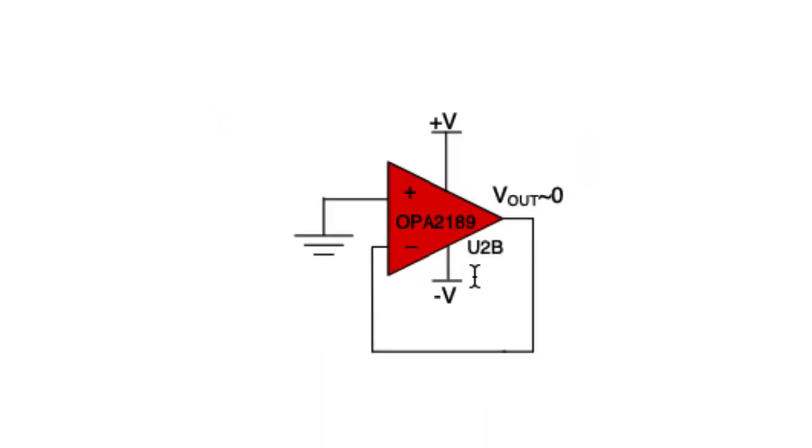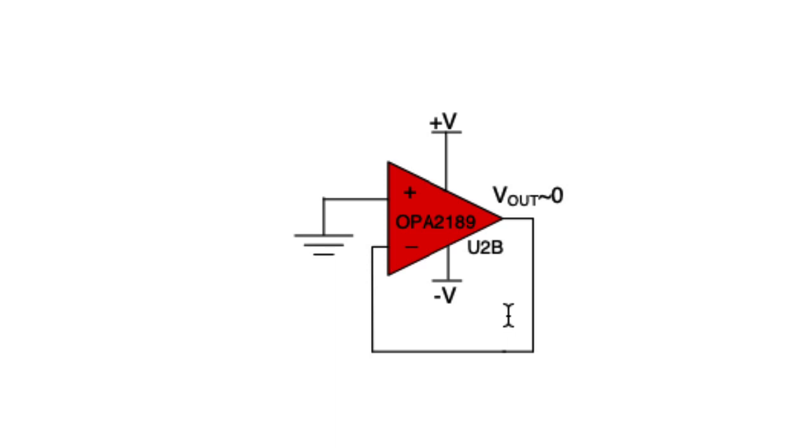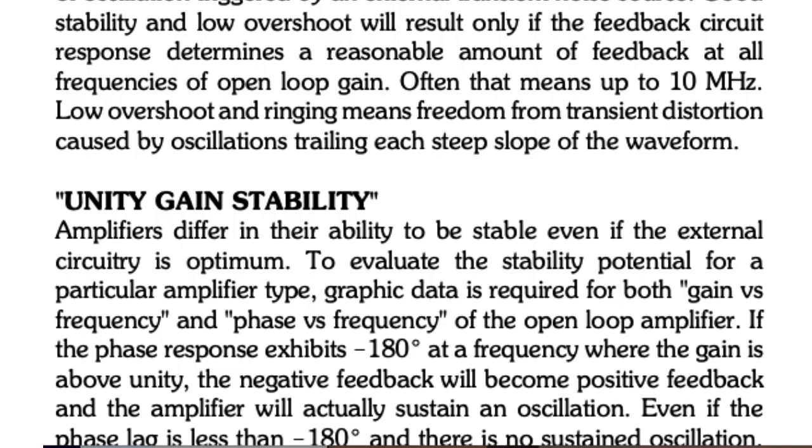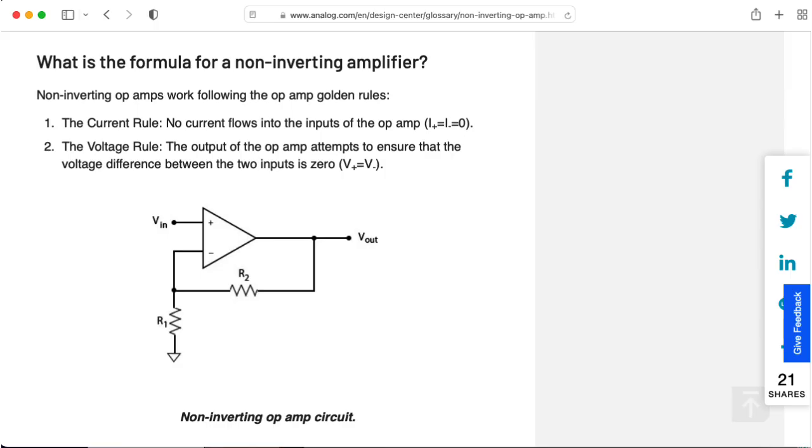I should also mention that setting up the op-amp as a voltage follower really only works if the op-amp is unity gain stable. Otherwise, you would want to include a voltage divider in the feedback loop in order to make sure that the gain was in the stable region.